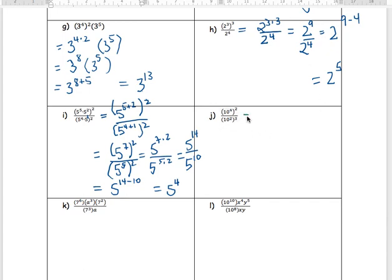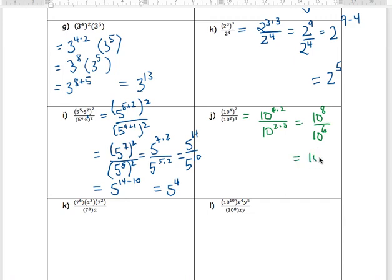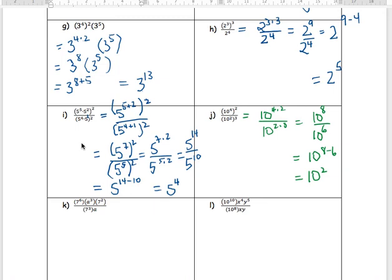Keep going — think BEDMAS and exponent laws. For the next one, the top is 10 to the 4 times 2, giving 10 to the 8, and the bottom is 10 to the 2 times 3, giving 10 to the 6. Subtract those exponents to get the final answer.